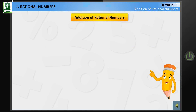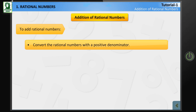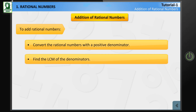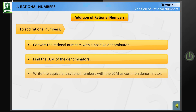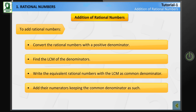To add rational numbers: convert the rational numbers with a positive denominator, find the LCM of the denominators, write the equivalent rational numbers with the LCM as common denominator, then add their numerators, keeping the common denominator as such.